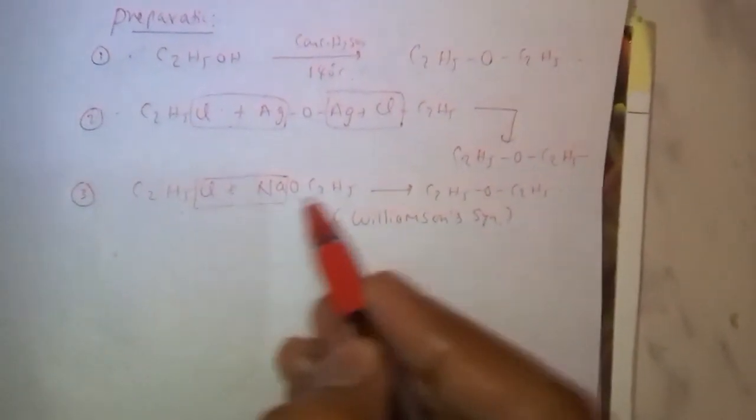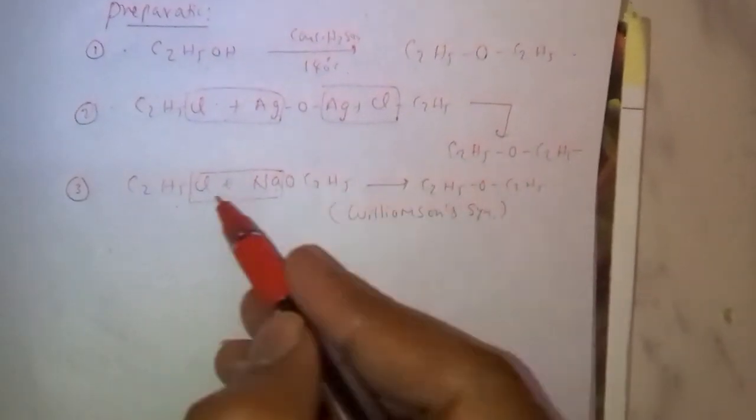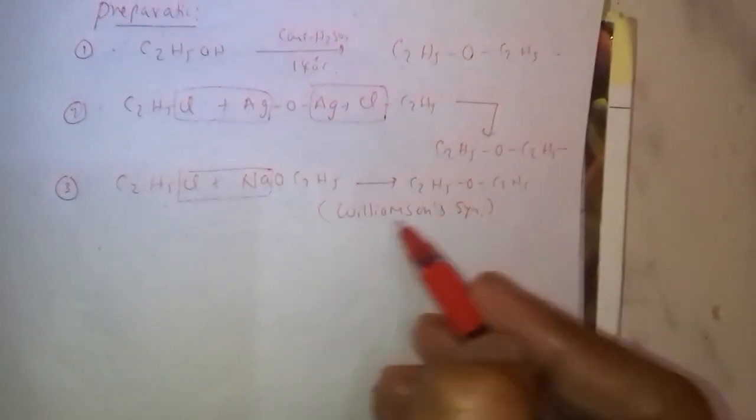Ethyl chloride when reacts with sodium methoxide, by removal of NaCl, it forms diethyl ether. This one is a named reaction, known as Williamson synthesis.